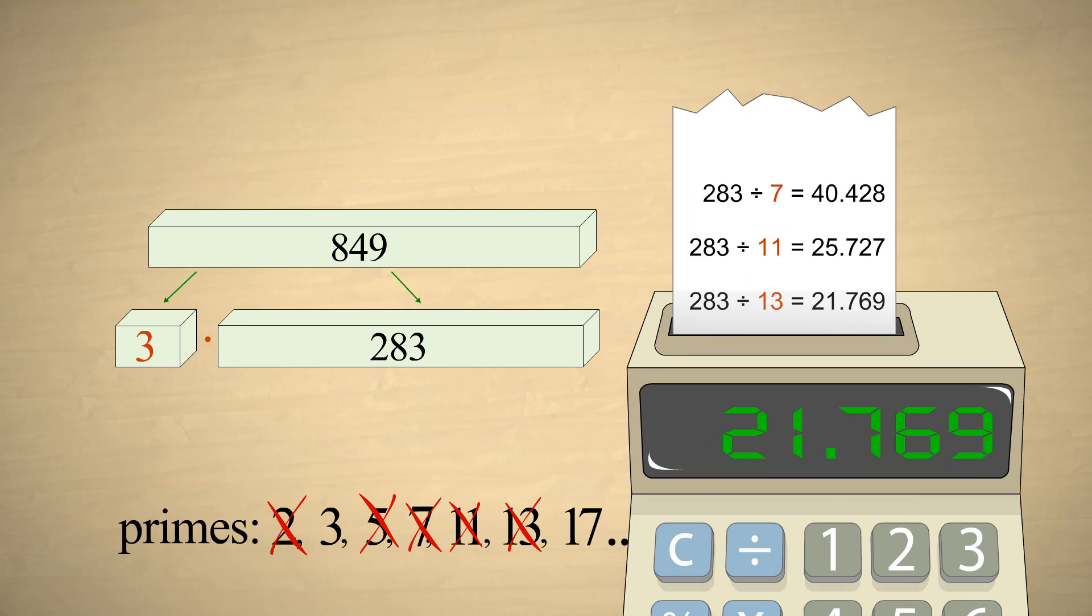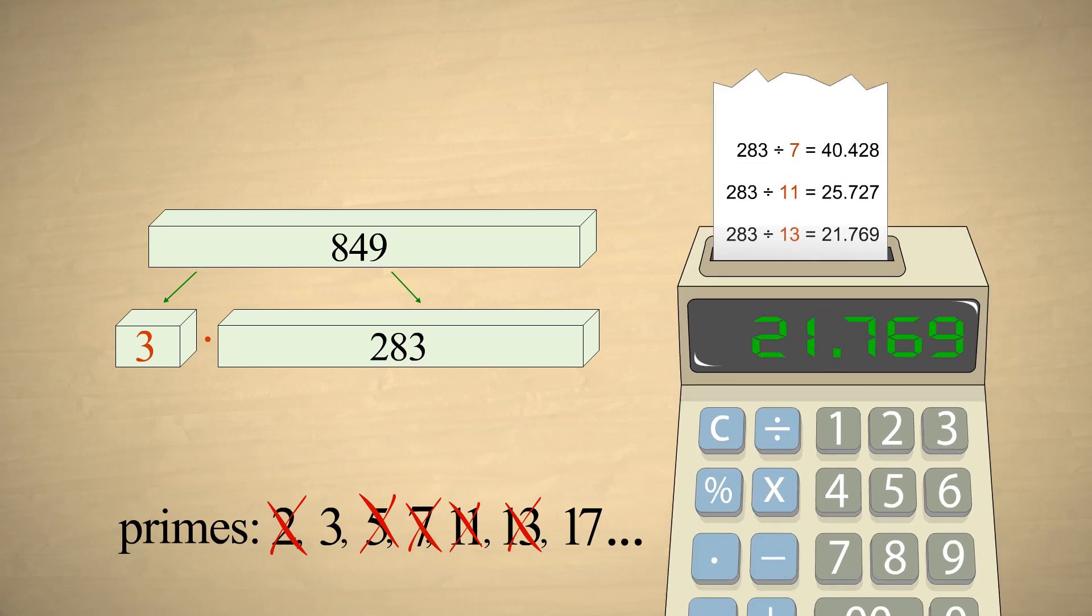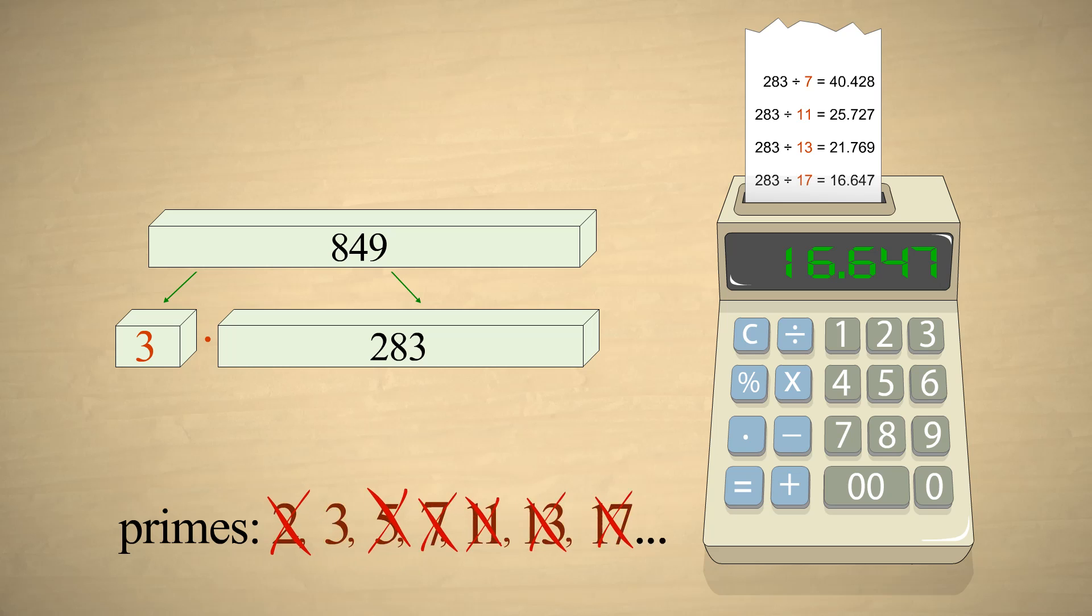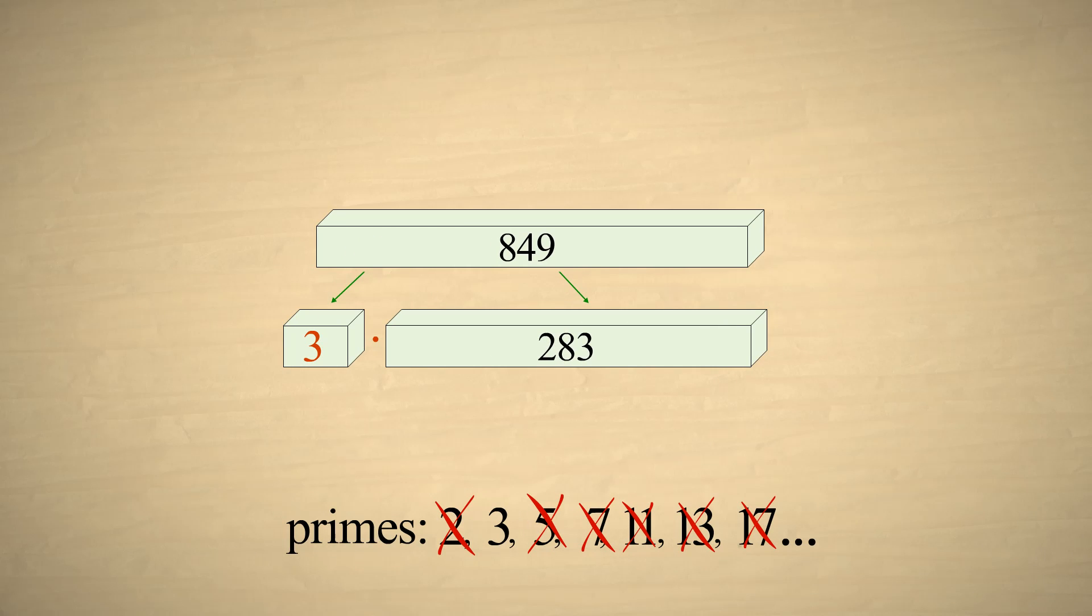Notice that as we divide by larger numbers, the results keep getting smaller. When we divide by the next prime, 17, the result is smaller than 17. So we can stop testing. Why? Since factors must divide evenly, the result must be an integer. And that integer will also be a factor. We know that there are no more factors smaller than 17, because we have already tested them all. Therefore, we can stop testing.